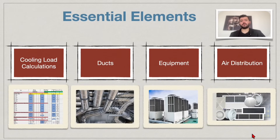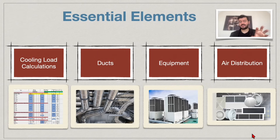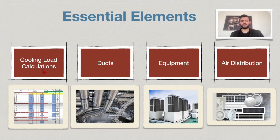Welcome back. In the previous lecture we covered the design sequence for an HVAC system — the key steps from A to Z for smooth implementation. In this lecture, I'll brief you on the essential elements every HVAC system should have. First are load calculations. I've focused on cooling loads here, as that is common practice in the market, though in some countries both heating and cooling load calculations are required. Software like HAP, manual calculations, and Excel sheets can be used.